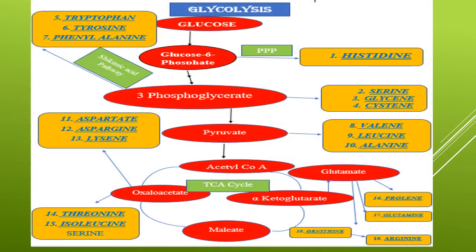This is the entire summary of amino acid biosynthesis. Most of the amino acids are obtained from either glycolysis or from the TCA cycle. From glycolysis: glucose is converted to glucose 6-phosphate, which enters into the pentose phosphate pathway, and the first amino acid obtained is histidine. From glucose 6-phosphate, 3-phosphoglycerate is obtained, and from 3-phosphoglycerate, three different amino acids are obtained: serine, glycine, and cysteine.